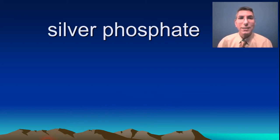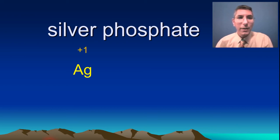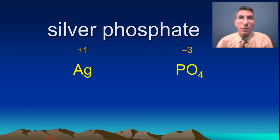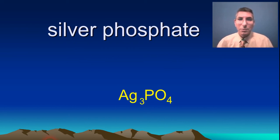Let's try silver phosphate. Silver has the symbol Ag with a charge of positive one from the ion chart. Phosphate is a polyatomic ion, PO₄, with a charge of negative three. The charges don't cancel, so we swap them. Notice there are no parentheses around PO₄ here, because we're not placing an additional subscript onto that ion. The formula is AgPO₄.